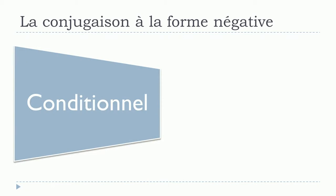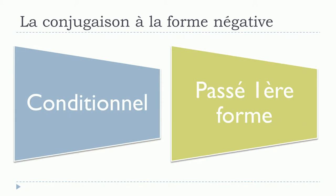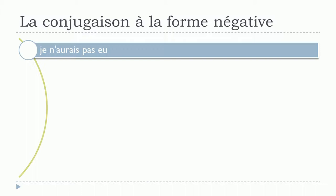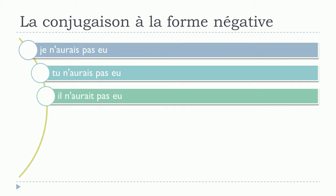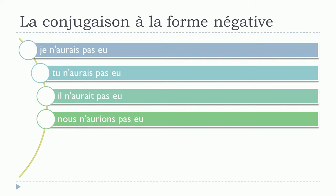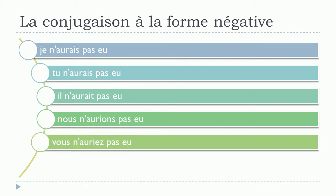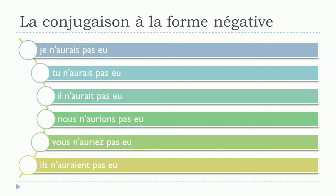Et un conditionnel passé, première forme. Je n'aurais pas eu. Tu n'aurais pas eu. Il n'aurait pas eu. Nous n'aurions pas eu. Vous n'auriez pas eu. Ils n'auraient pas eu.